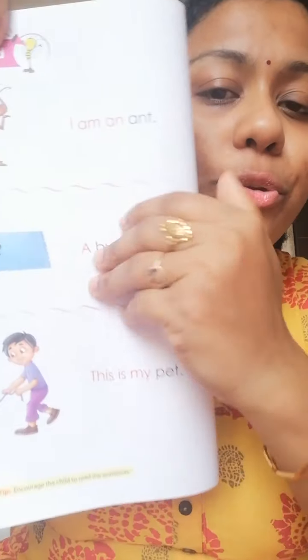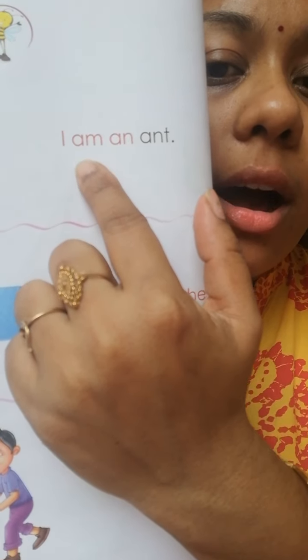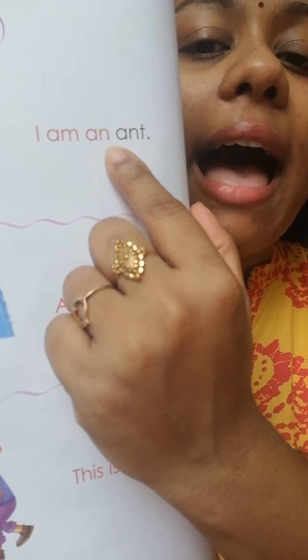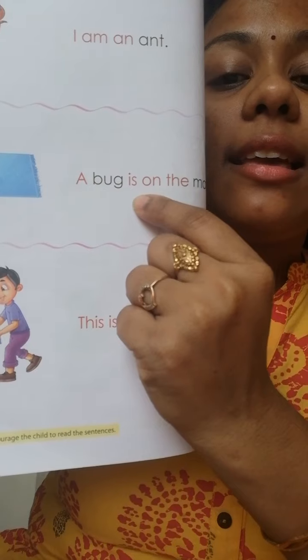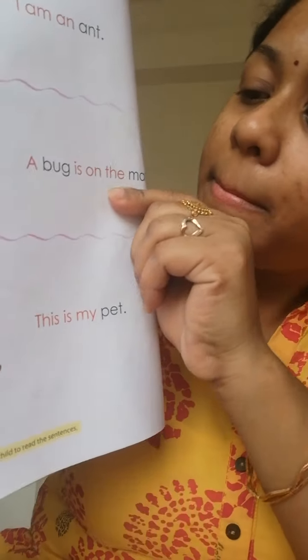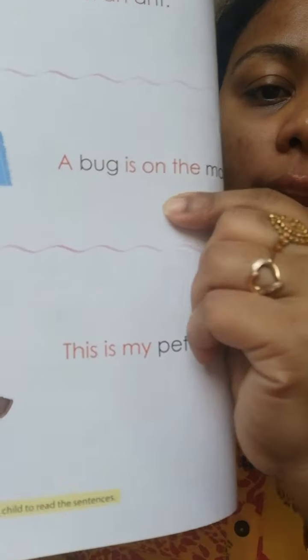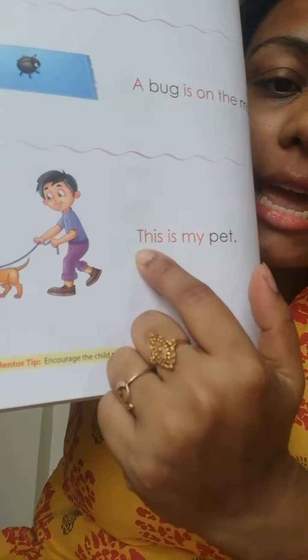See, the sight words are: I am. A-M, am. A-N, an. A. Is. O-N, on. T-H-E, the.